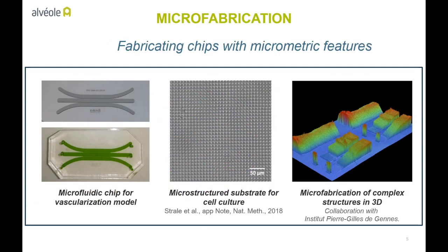The UV light is also useful to prototype micro-fabrication experiments without the need of a photomask. This allows for the generation of microfluidic chips, for instance, as shown on the left, or arrays of micro-pillars, as shown in the center. Because the PRIMO technology can also project UV light in a quantitative manner, complex Z-controlled micro-fabricated objects can also be designed out of UV-sensitive photoresist, as you can see on the right side of the slide.